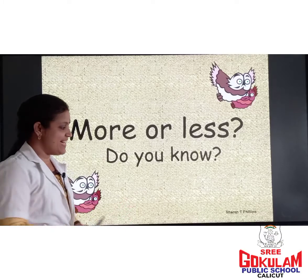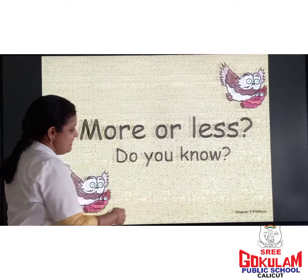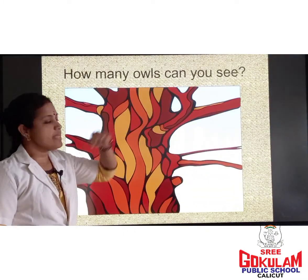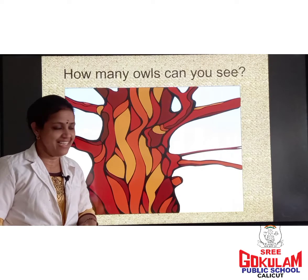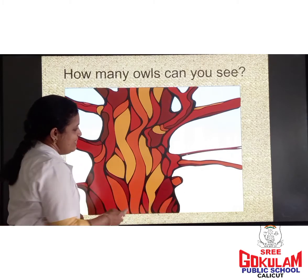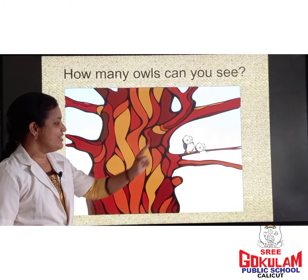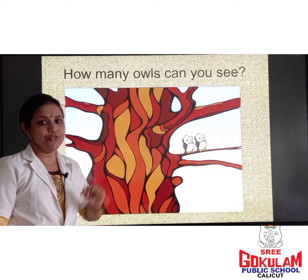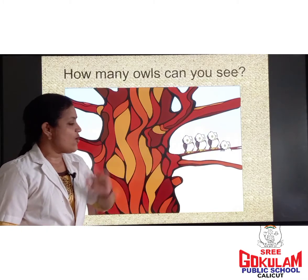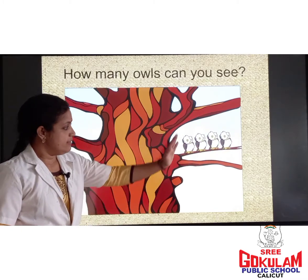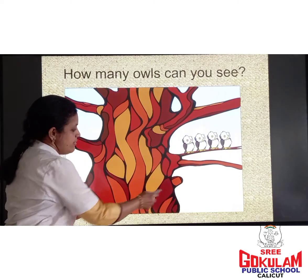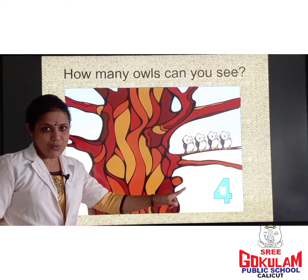Now look here children. How many owls can you see? Look at this picture. One, two, three, four. This branch has four owls.